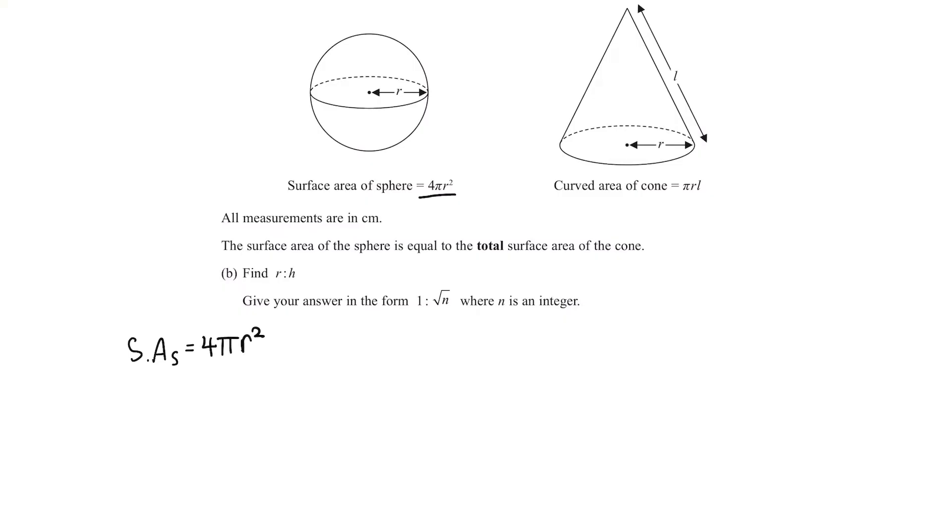Then we want the surface area of the cone, S.A.C. The formula here is giving us the curved area, just the cone bit. However, we want the total surface area of the cone, so we need to add on this bottom circle with radius R. We do pi R L, the curved surface area, and then add on this bottom circle's area, which is pi R squared.